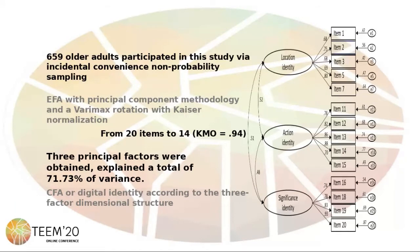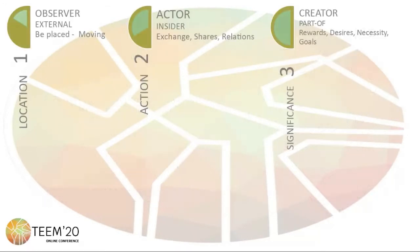An exploratory and confirmatory factor analysis confirms the structure of three levels with three factors. From the 20 items initially considered, only 14 were retained in the analysis. I'm going to present the three subscales according to the three levels.